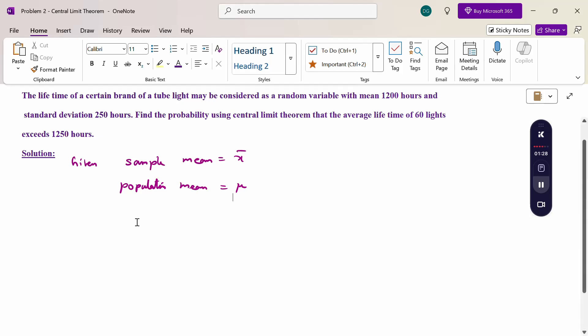Here for tube lights, we consider tube light working hours. The total maximum working hours taking average is the population. Sample mean is when some tube lights are selected and testing working hours. Now the problem gives population mean value mu equal to 1200 hours and standard deviation sigma equals 250 hours.